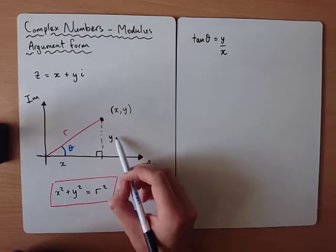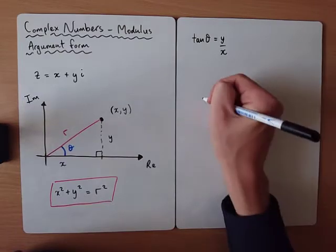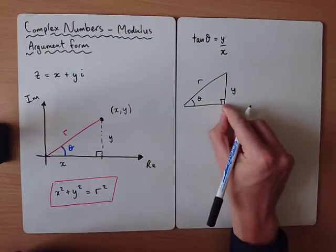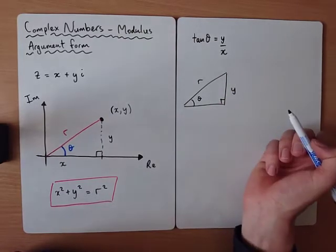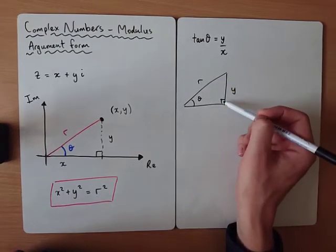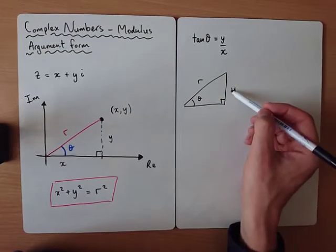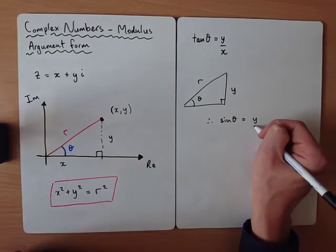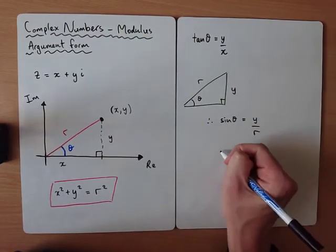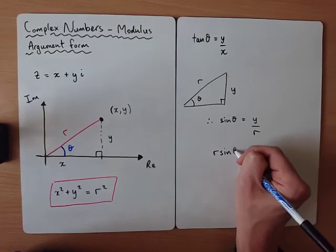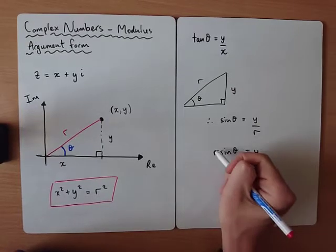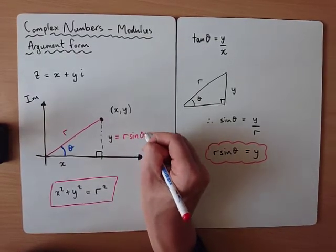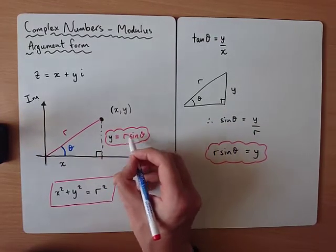If we know r and θ, we can find y. In the right-angled triangle, y is the opposite side and r is the hypotenuse. So sin θ = opposite/hypotenuse, which gives us y = r sin θ. This is a really useful relationship to remember for swapping between representations.